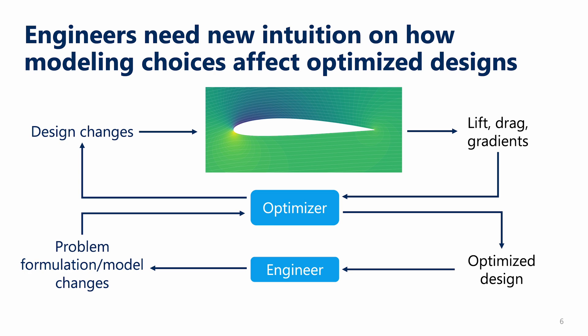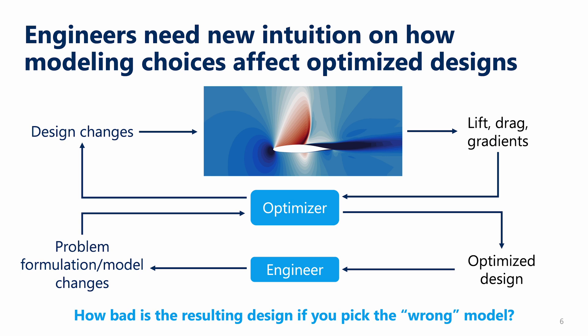This requires engineering intuition, but a slightly different kind than was used in the past. The only information the optimizer has access to is whatever the CFD code uses to compute the scalar performance metrics. This raises the risk that if you pick the wrong analysis method that doesn't include all the necessary physics, you might end up with an optimized design that's not actually an improvement. This raises the question: what happens if you pick the wrong model, the wrong CFD code? If you don't include all the physics, what will happen to the optimized design?